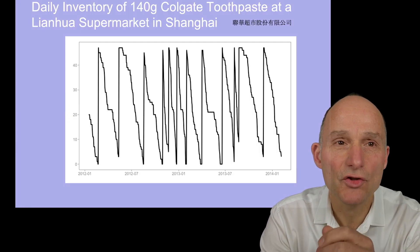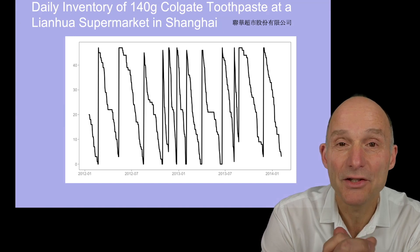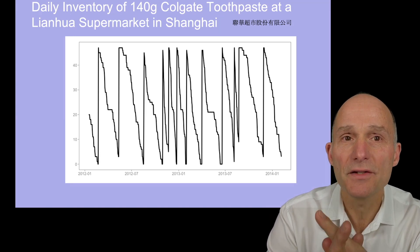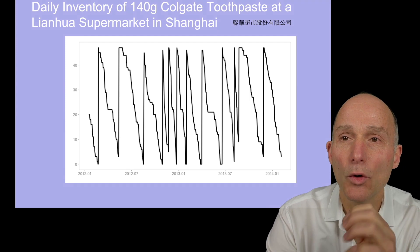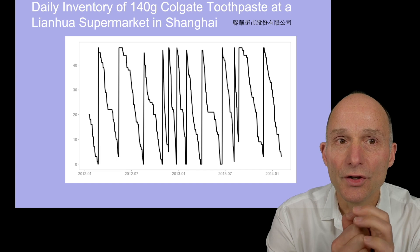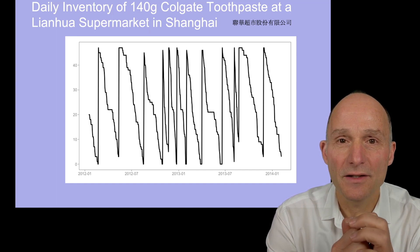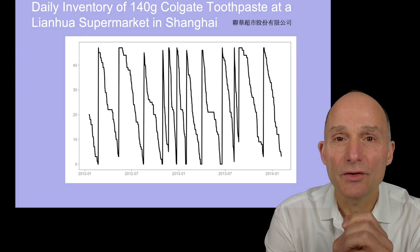Imagine you manage a supermarket. An important part of your job would be to manage its inventory. Here's the actual inventory recorded daily from a supermarket in Shanghai. The graph shows the number of individual 150 grams Colgate toothpaste, and their inventory follows a triangular pattern.